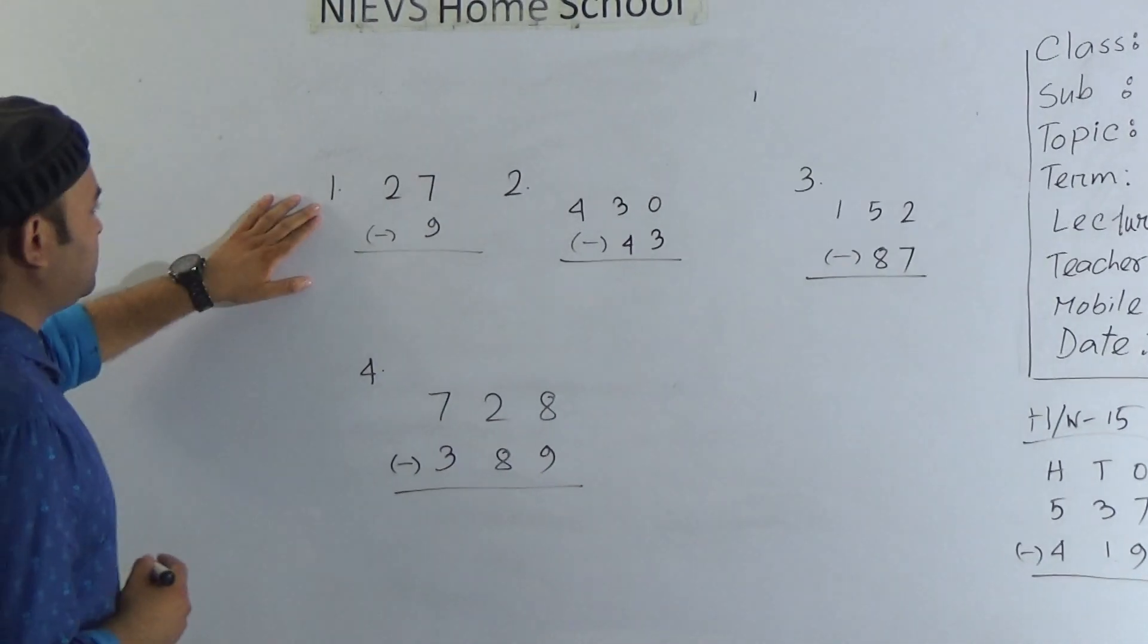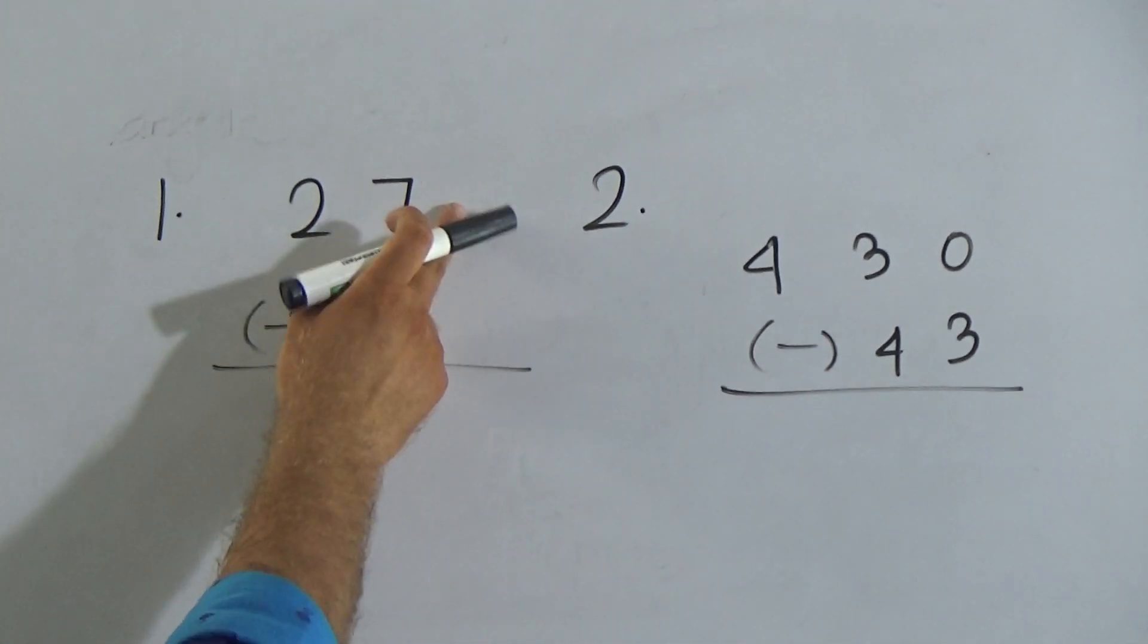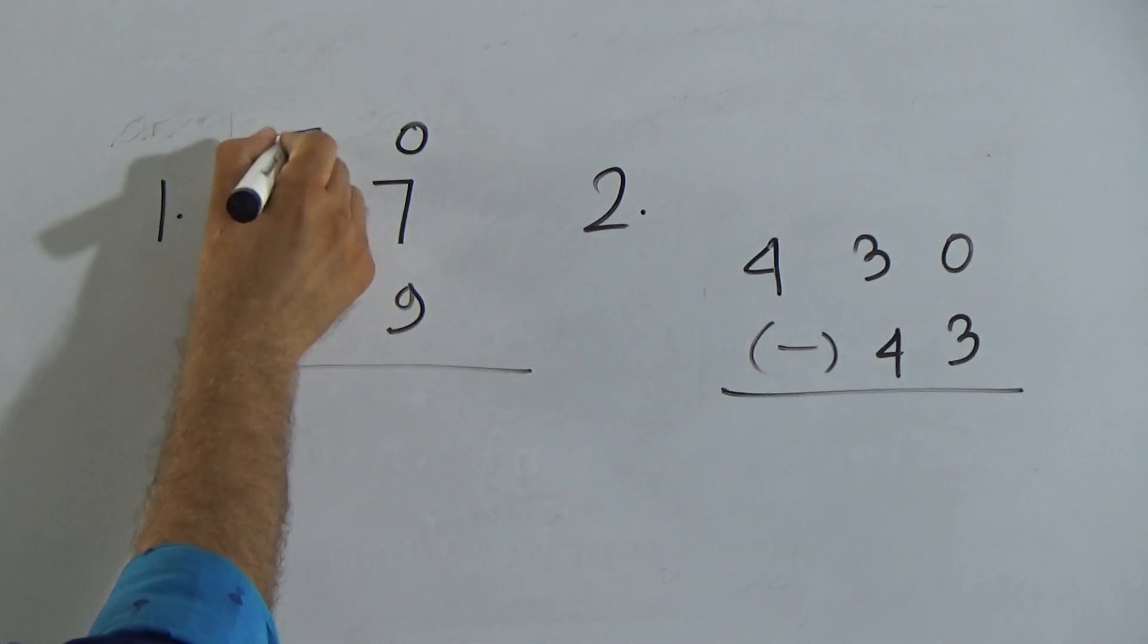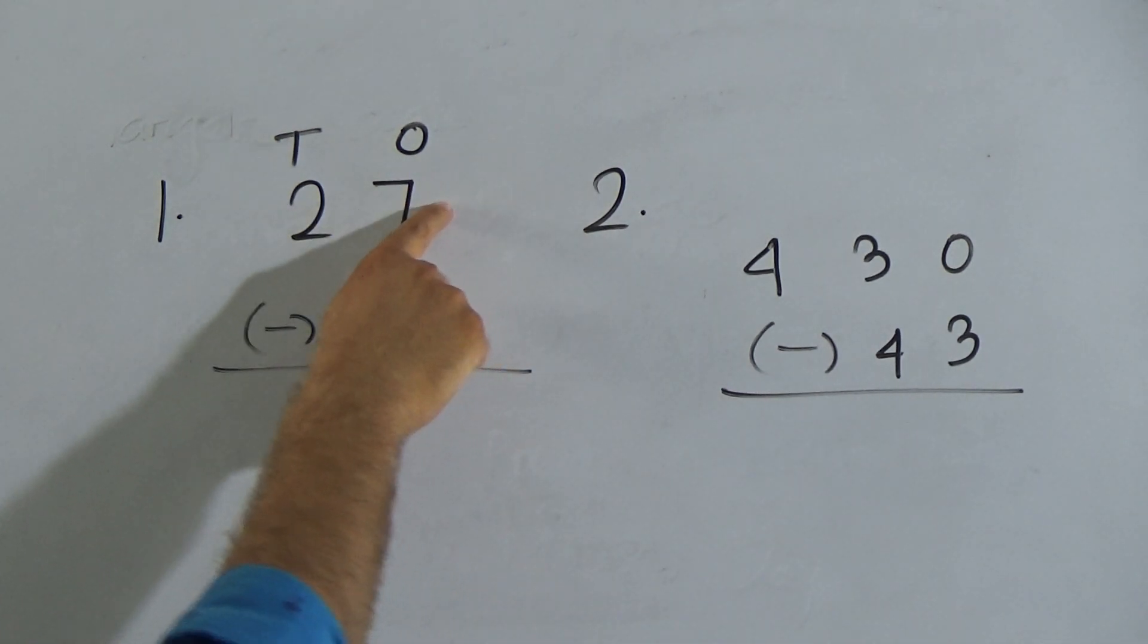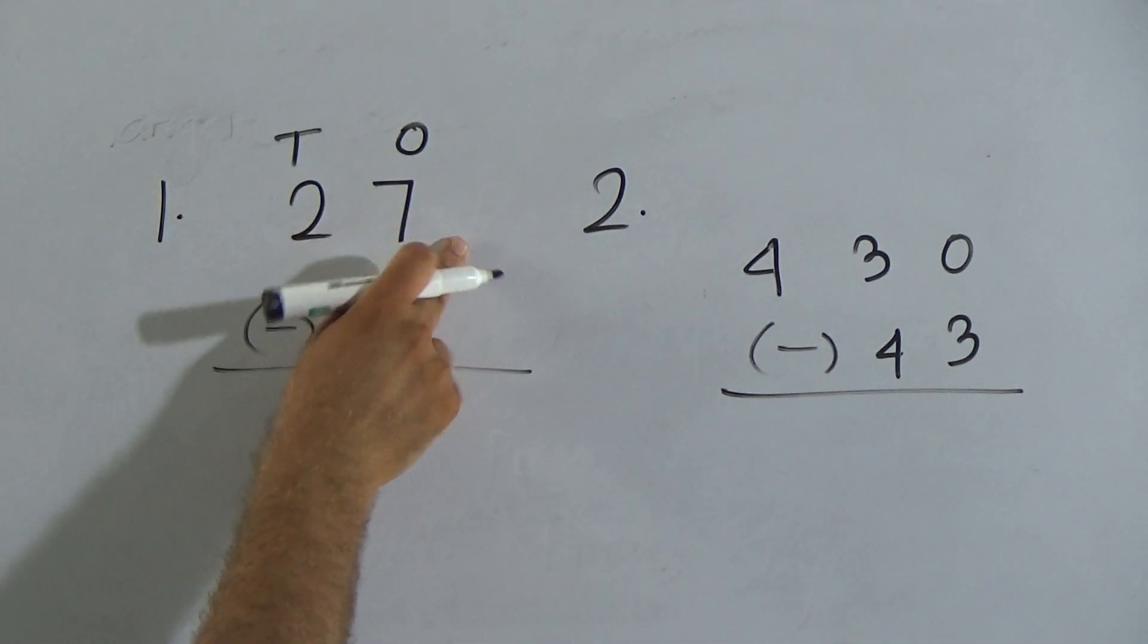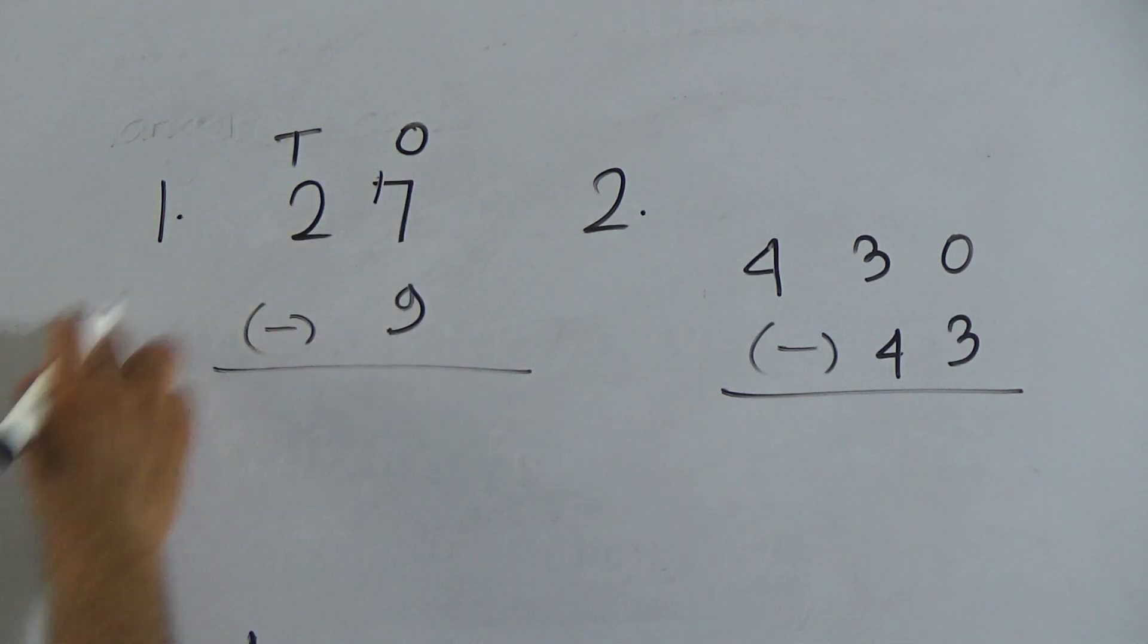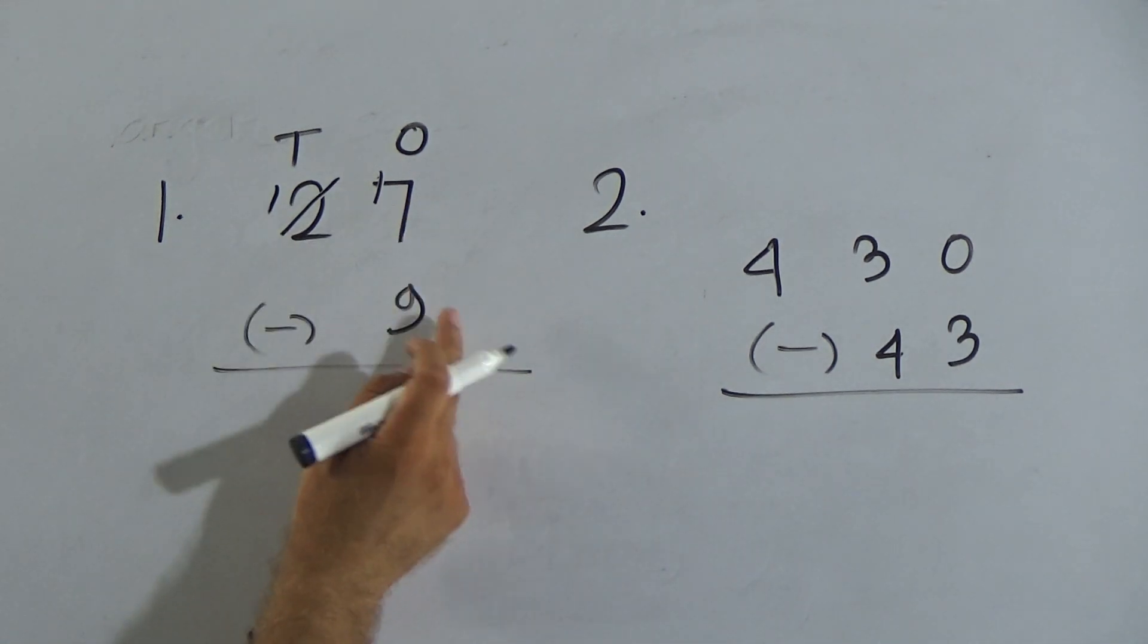Here is number 1: 27 and 9. We have to subtract 9 from 27. Look here, 7 and 9 are in 1's place, and 2 is in 10's place. But the top digit 7 is smaller than bottom 9, so we have to borrow a number from the next column, the 10's column. After borrowing 1 ten, it makes 17, and this will be 1. Now we subtract...